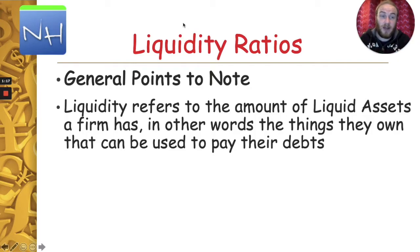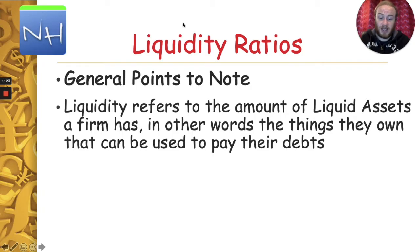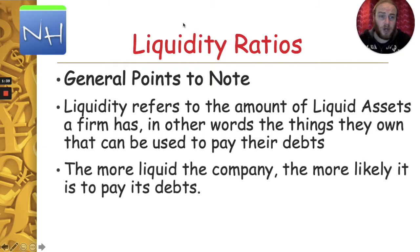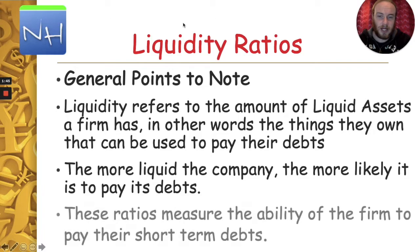For example, if I have a 20 euro note, that is a liquid asset to me - something I own and it's in cash. A liquid asset is something you can turn into cash quickly, in other words things they own that can be used to pay their debts. The more liquid a company is, the more likely it is to pay its debts. So the more cash or things that can turn into cash quickly, the more likely it is to be able to pay its debts.